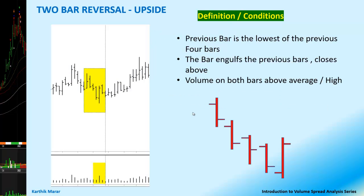Let's look at the definition and conditions for the 2-bar reversal. The previous bar should be the lowest of the previous 4 bars — as you can see here, this bar's low is the lowest of the previous 4 bars. The current bar should engulf the previous bar and close high — it should open low and close high. The volume on both bars, the current bar and the previous bar, should be above average or high.